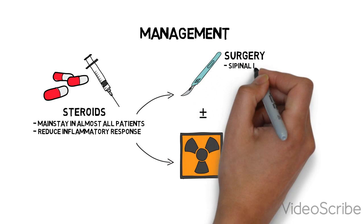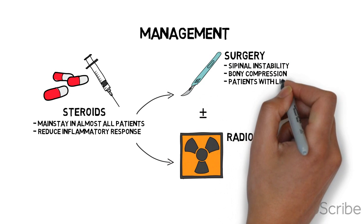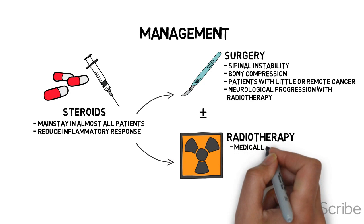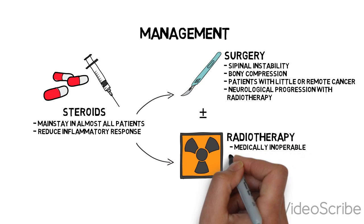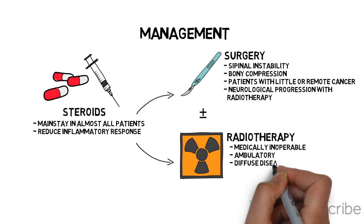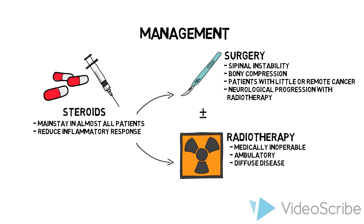For most patients, radiation is the mainstay, but in fit and well patients, surgery plus adjuvant radiation may be an option. Chemotherapy is rarely used for spinal cord compression, as most malignancies causing spinal cord compression are chemo-resistant and would not respond in a timely enough fashion to eliminate this emergency.